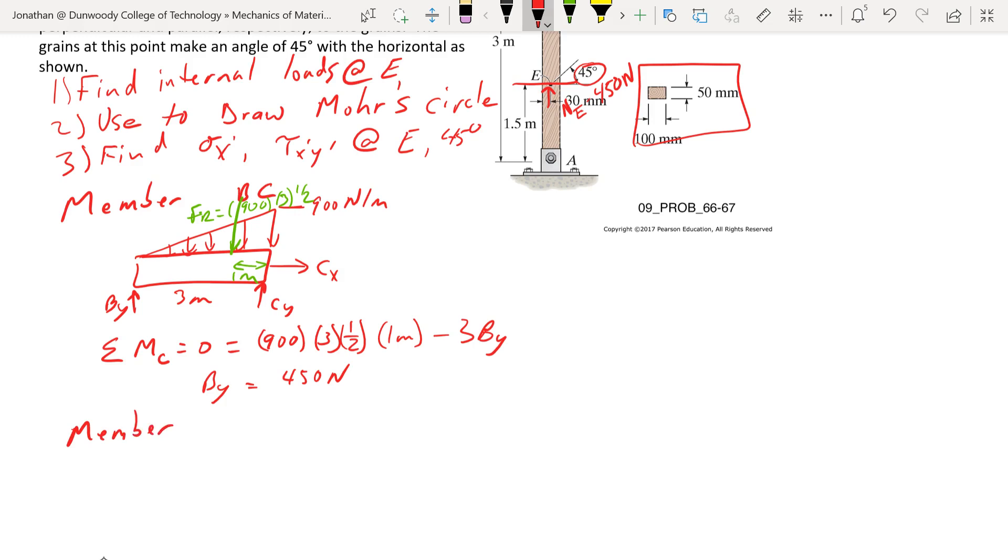Member AB, N equals negative 450 newtons. Our stress, sigma E, so N over A, negative 450 newtons over, what we have here, 0.1 meters times 0.05 meters. So we're going to find a stress, normal stress, of negative 90 kilopascals, and that's in the sigma y direction.